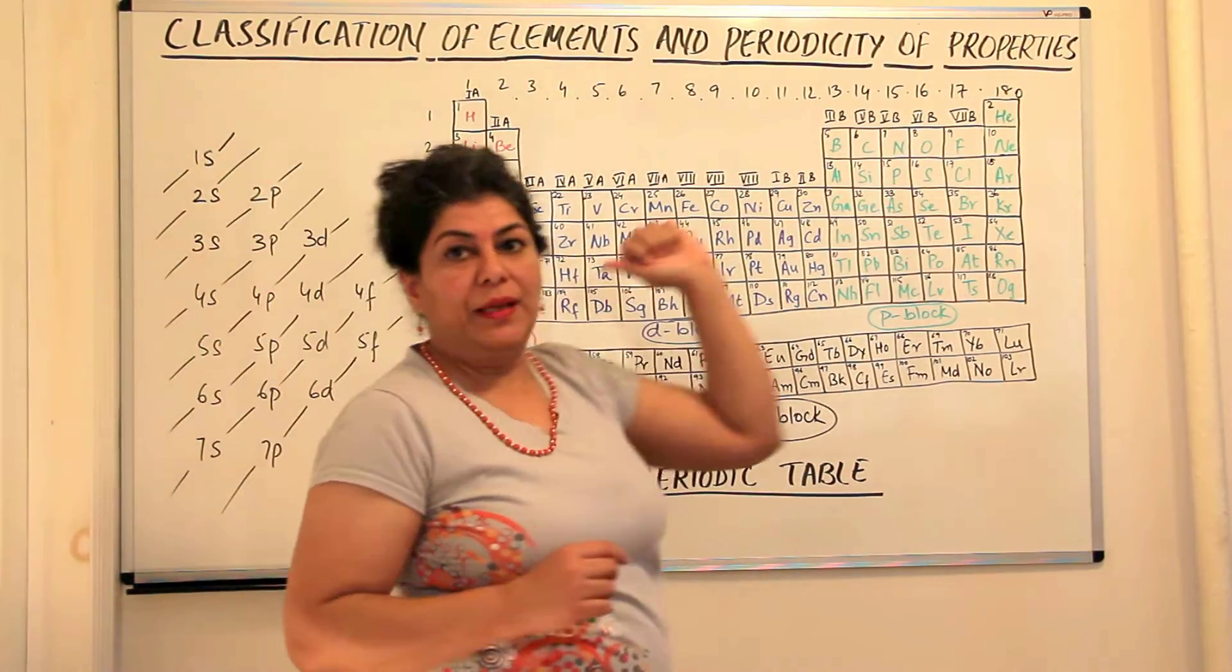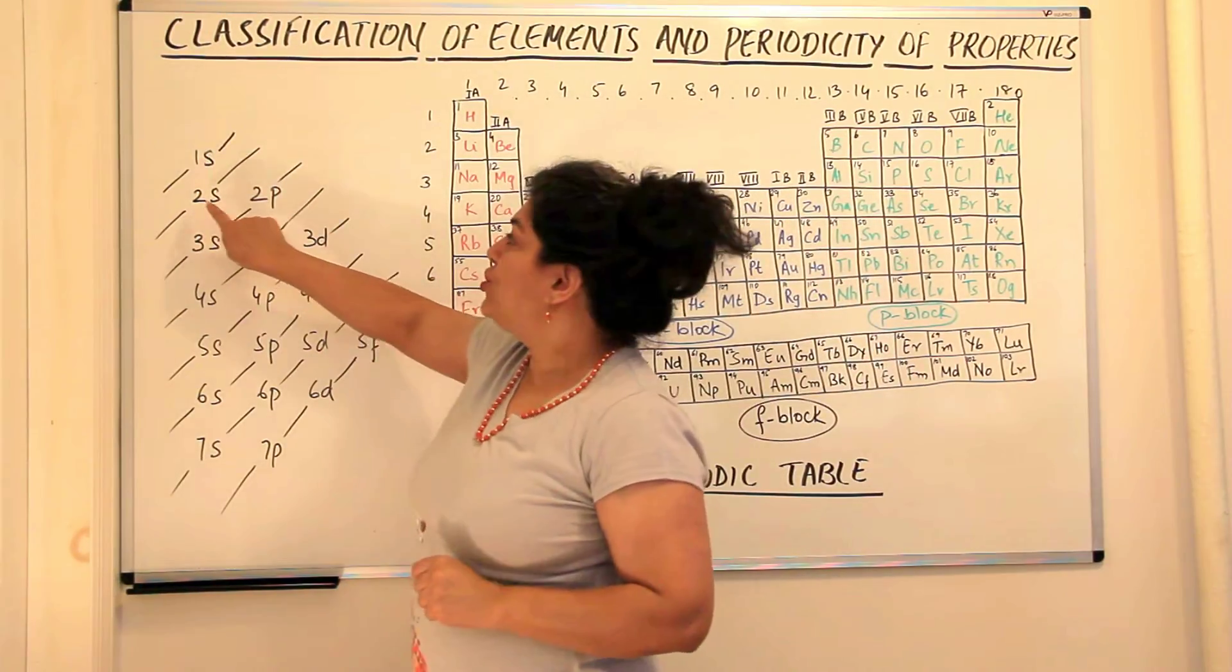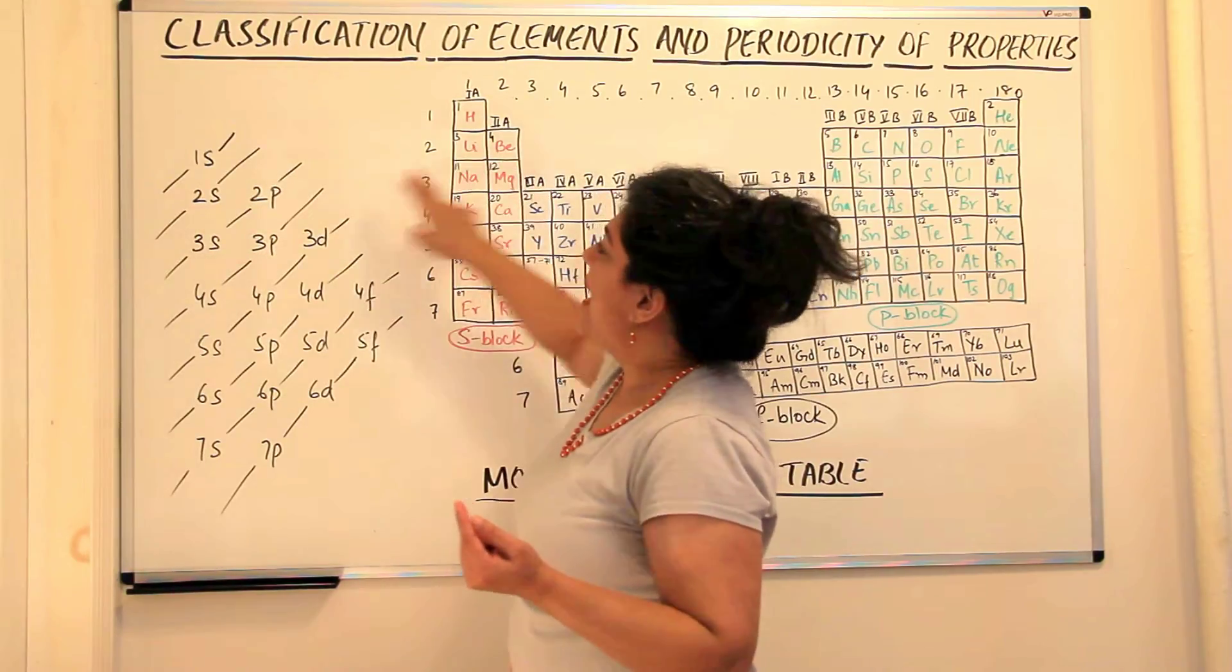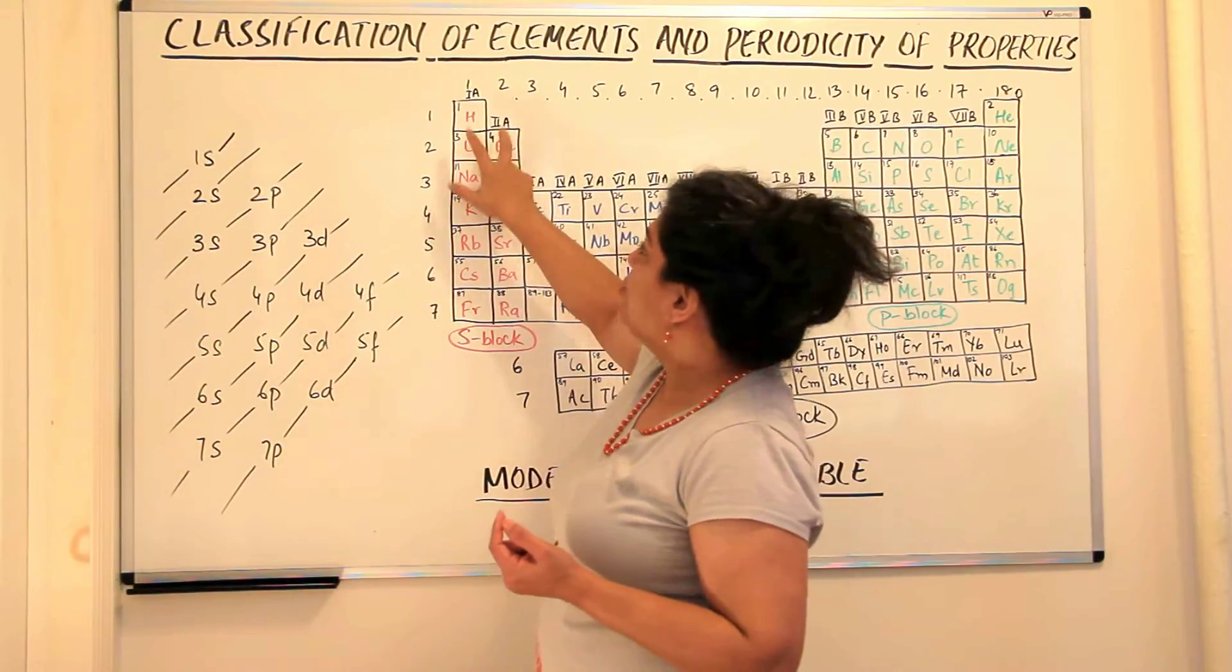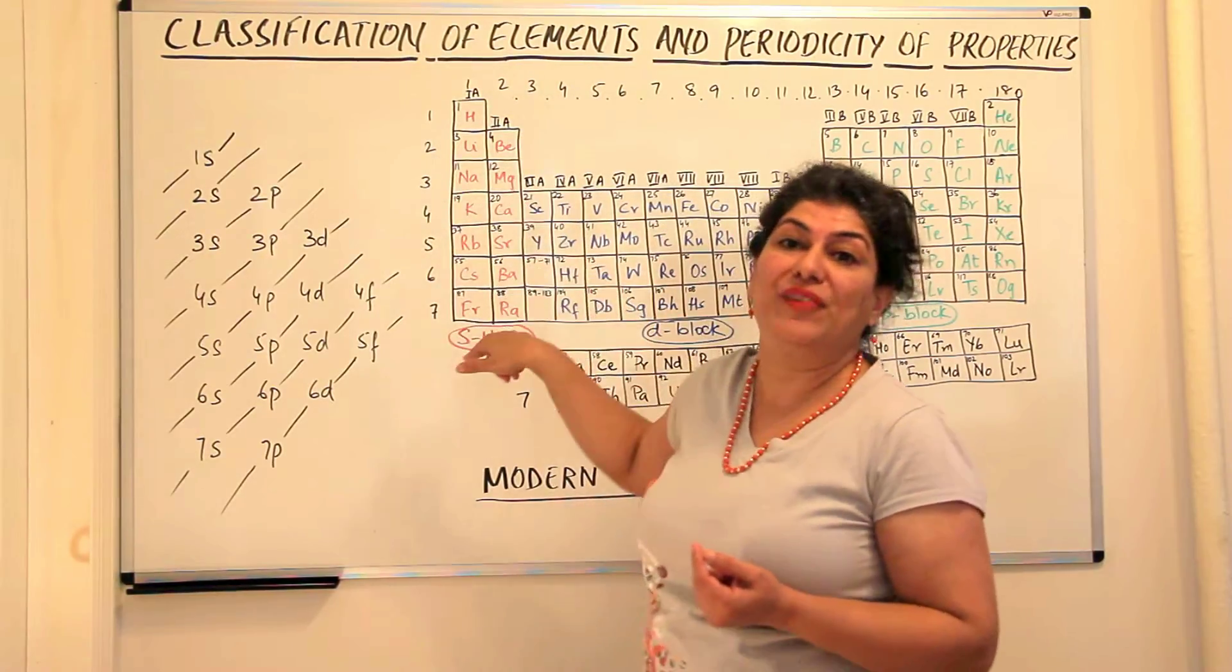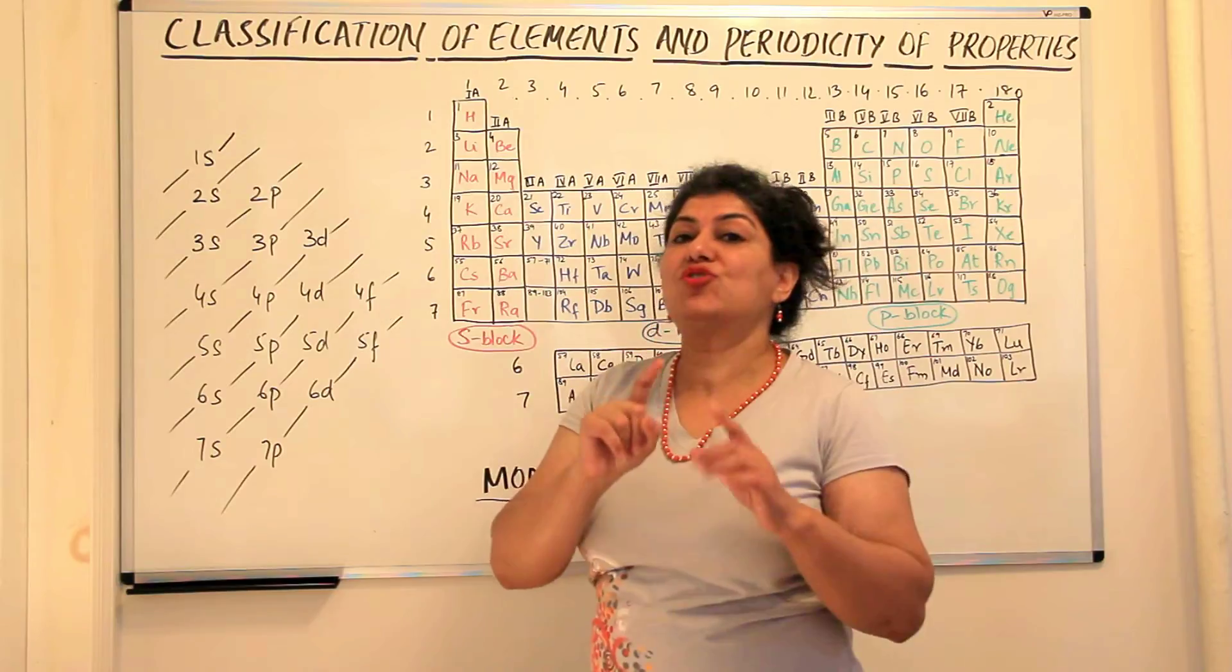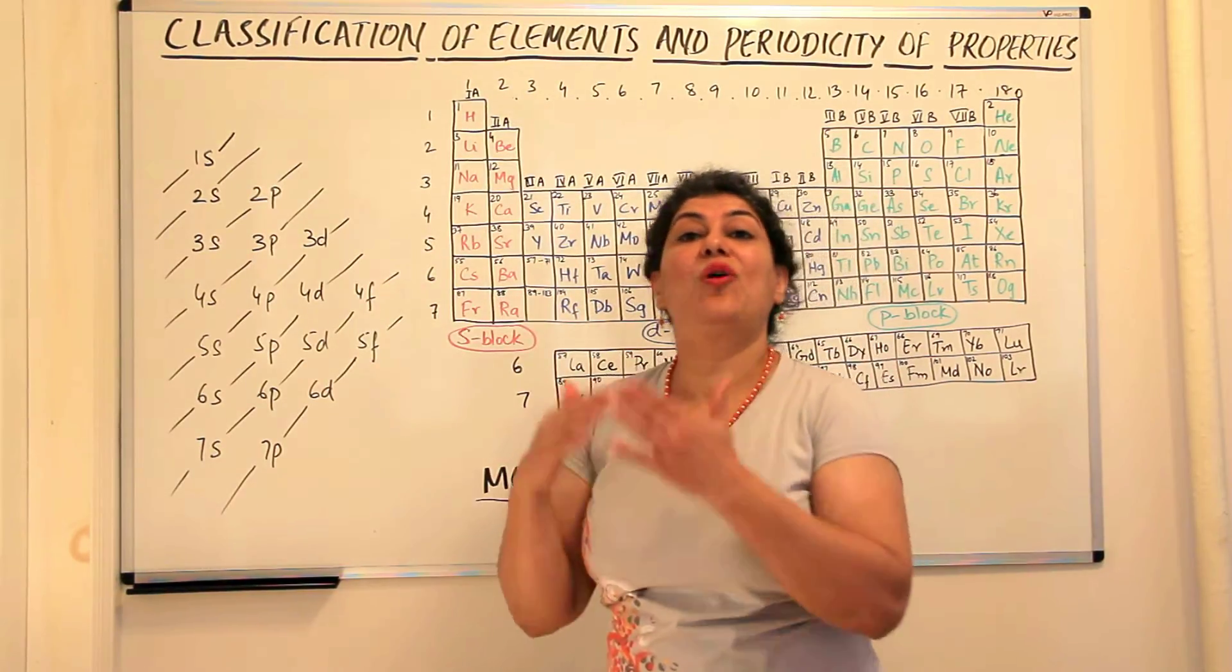Now we come to the third element is lithium. Lithium has three electrons, two go to 1s and one goes to 2s. So in hydrogen there was one electron in the 1s shell but in lithium there is one electron in the 2s. Beryllium has two electrons in the 2s, therefore it is placed here, it's the second group.